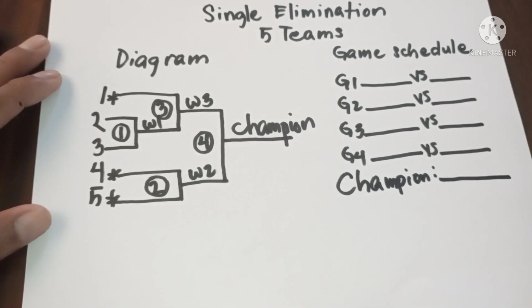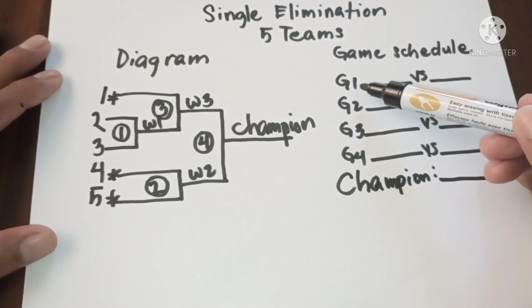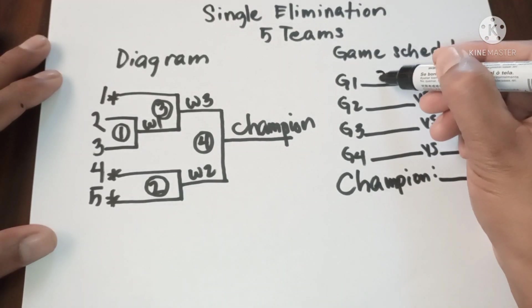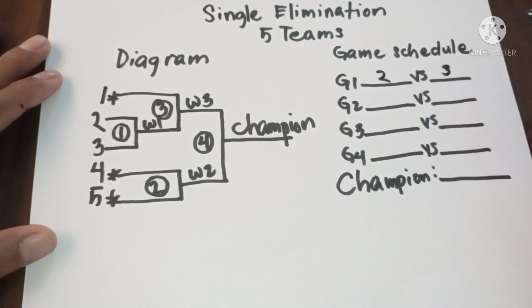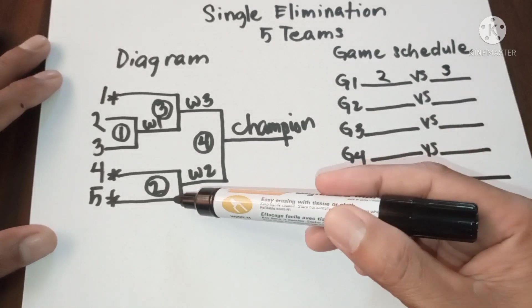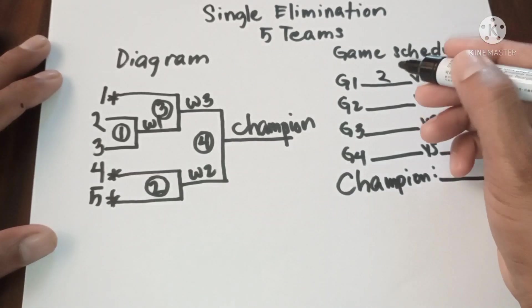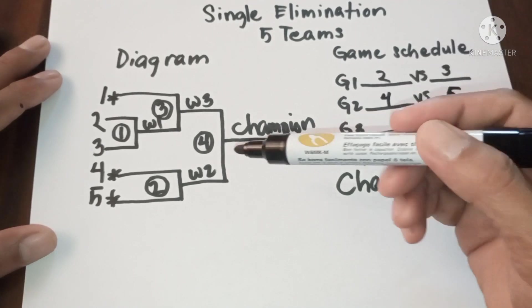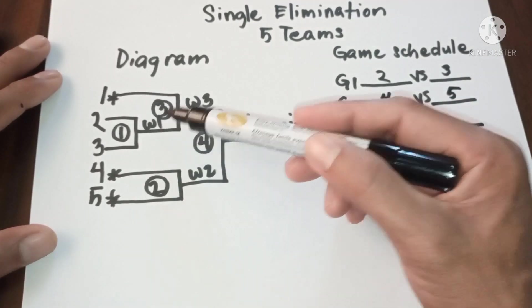So let's interpret this diagram. In game one we have two versus three. In game two we have four versus five. In game three we have one versus winner one.